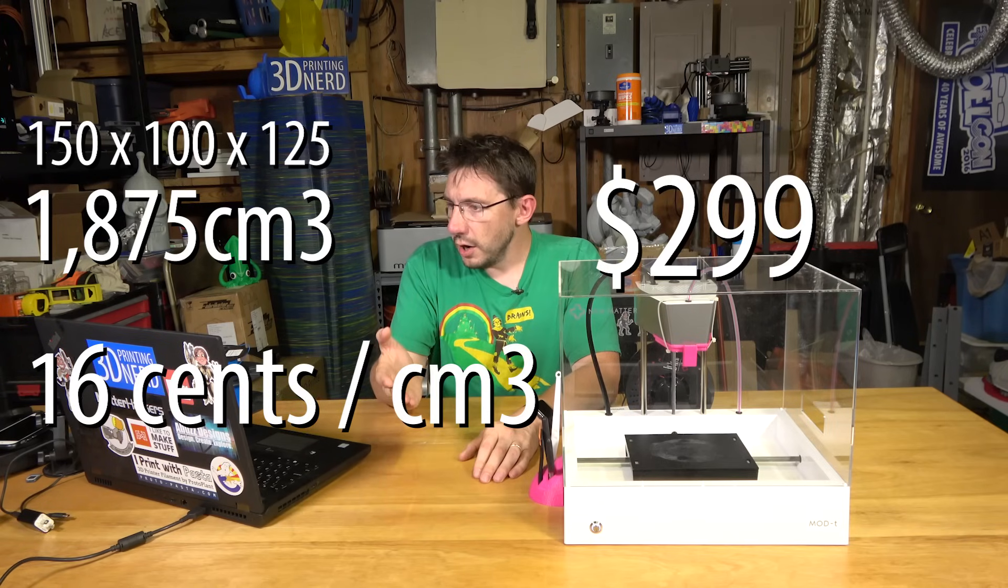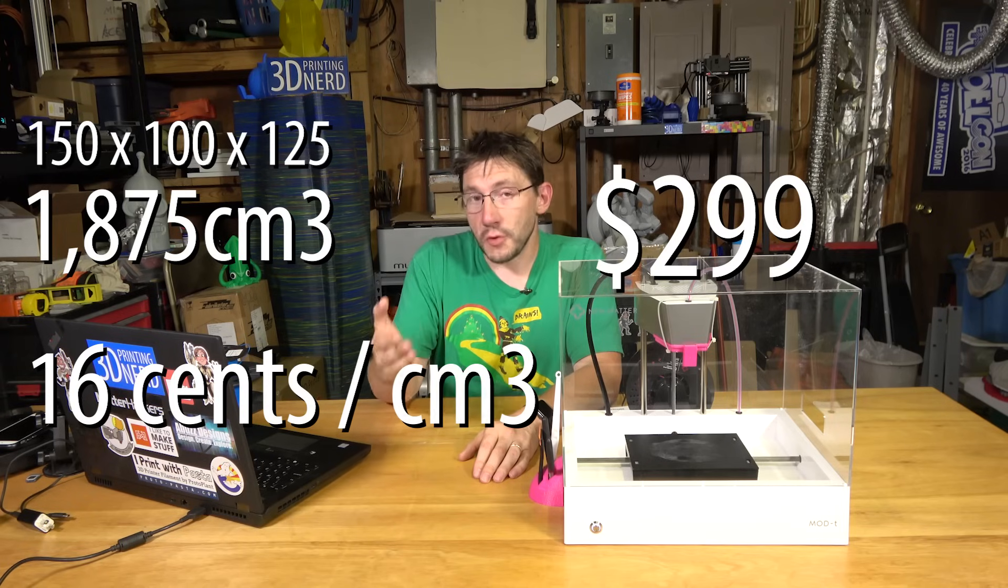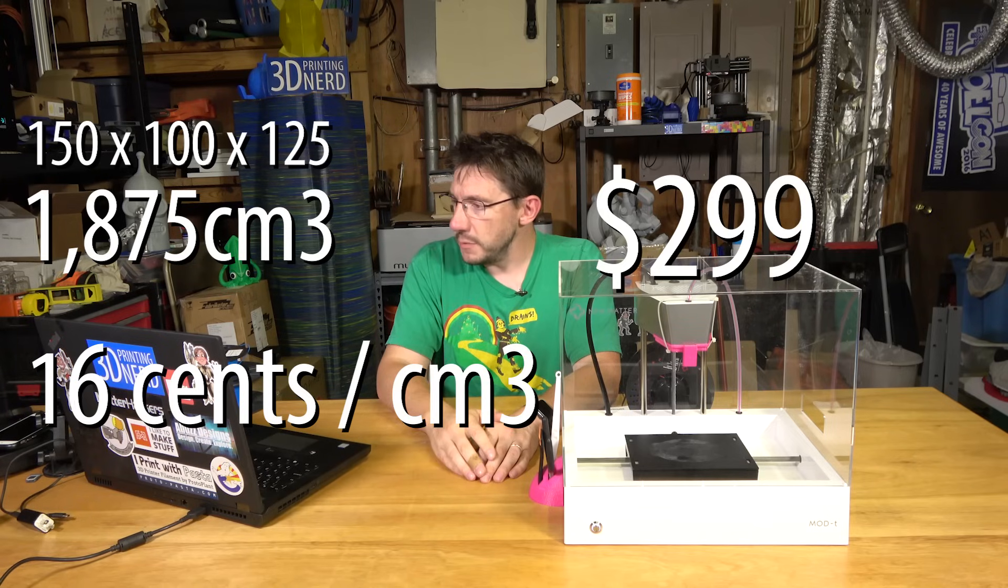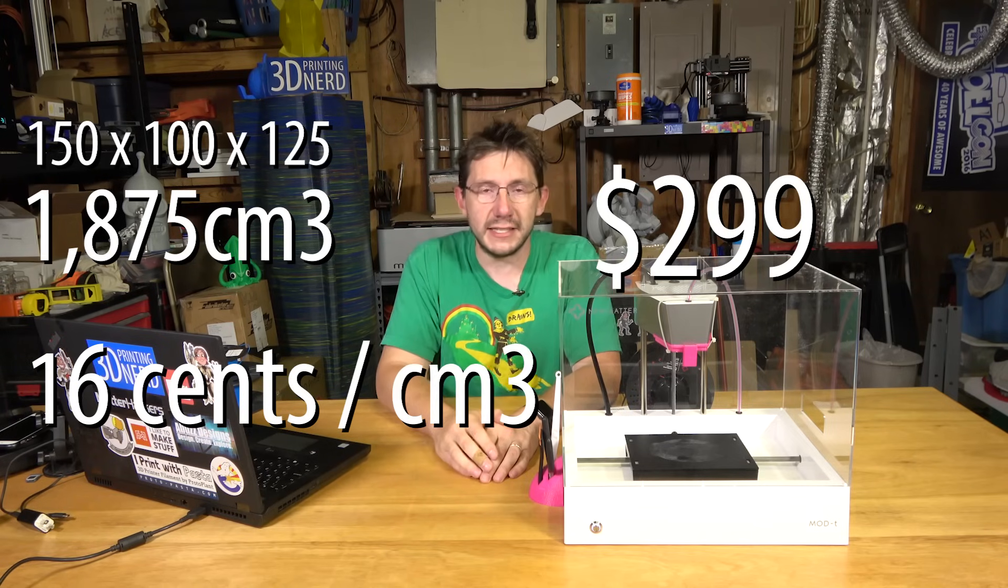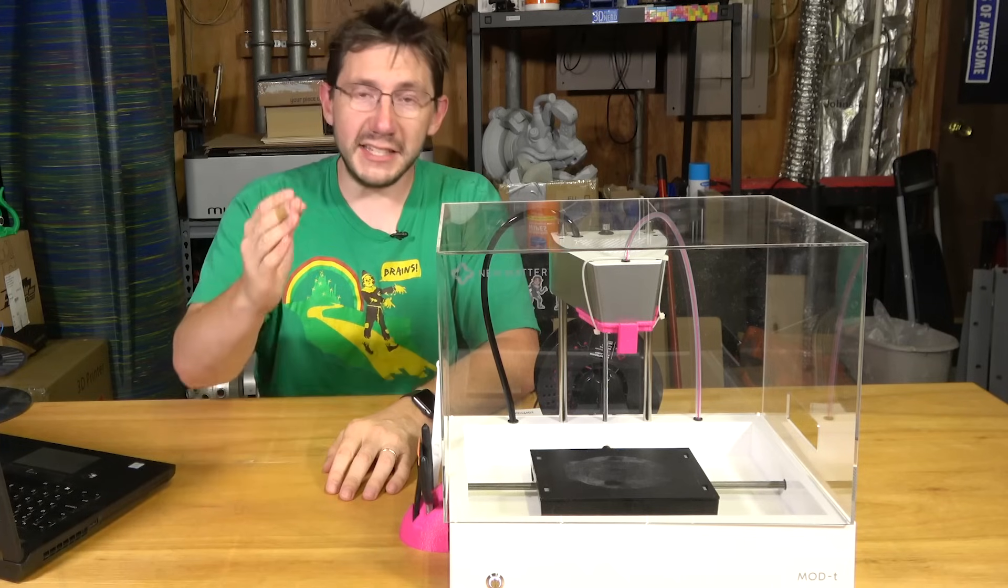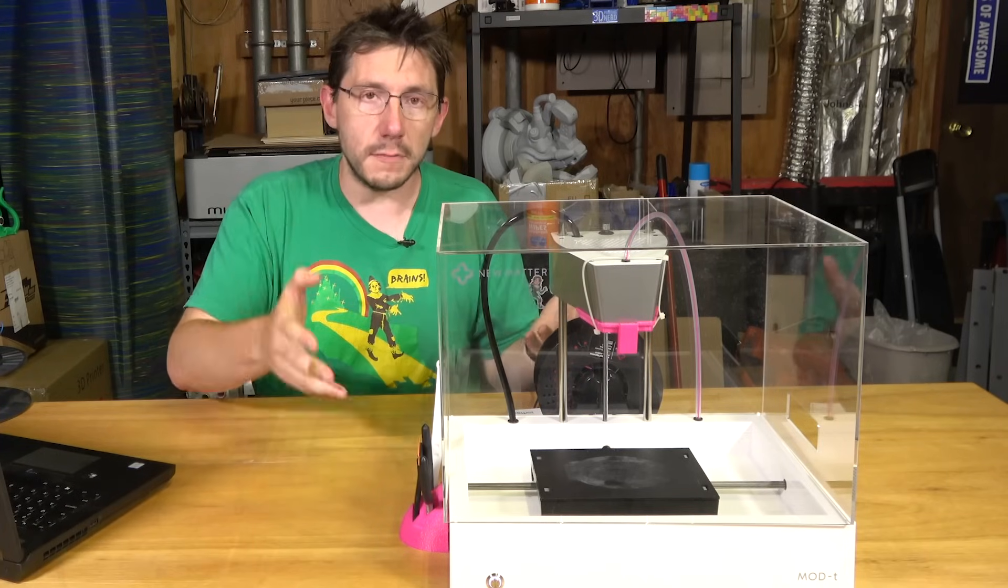Its neighbors in that category are the Zix printer at $0.19 per cubic centimeter, the Kodama Trinus at $0.20 per cubic centimeter, the Obsidian at $0.14 per cubic centimeter, and the Lulzbot Taz 6 at $0.13 per cubic centimeter. At $0.16 per cubic centimeter and at $299 then what does the Mod-T give you?